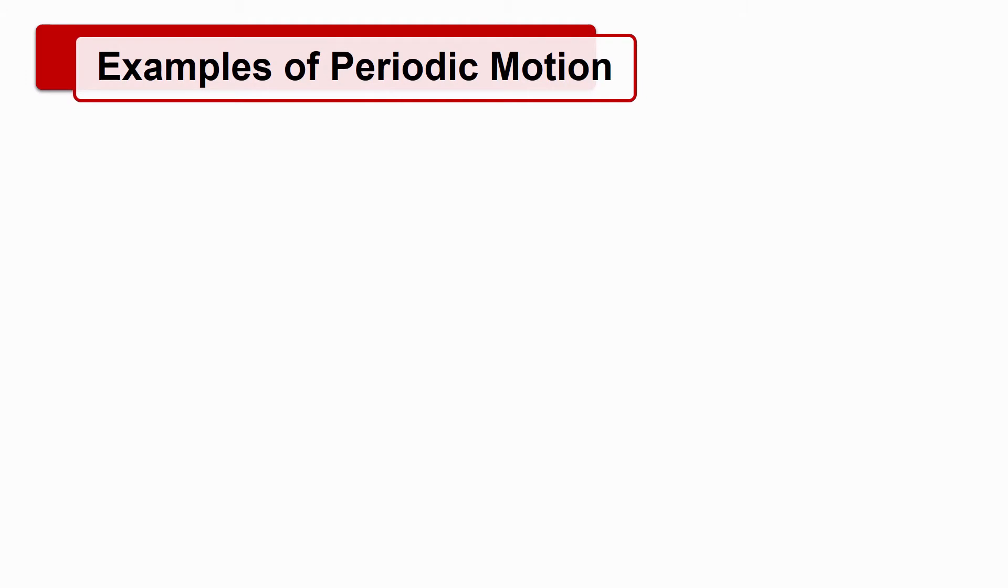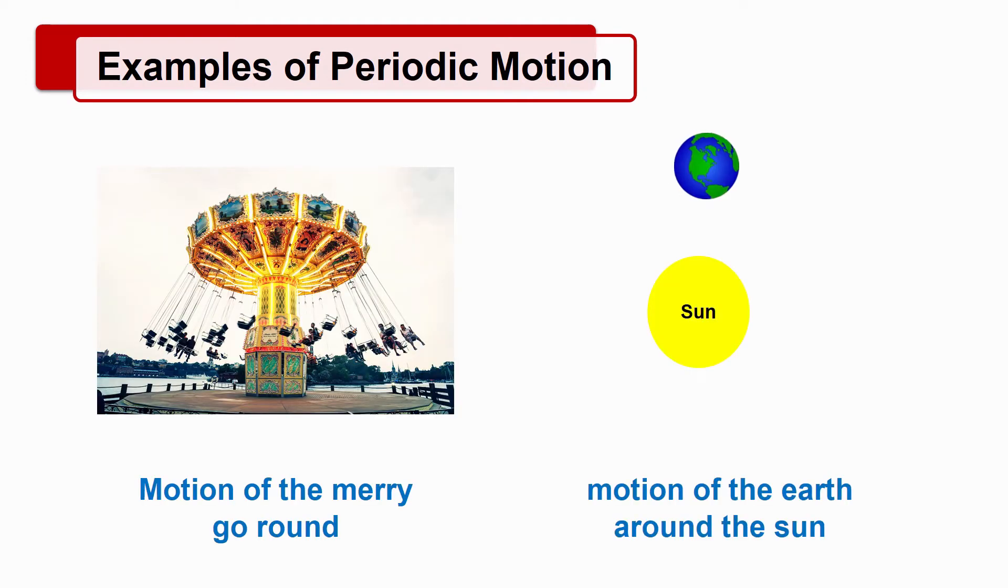Examples of periodic motion are motion of the merry-go-round, motion of the earth around the sun, etc.